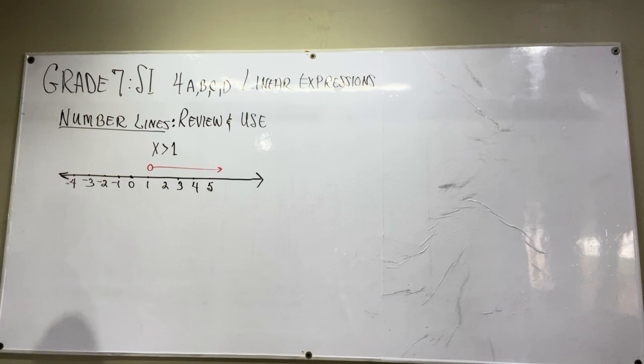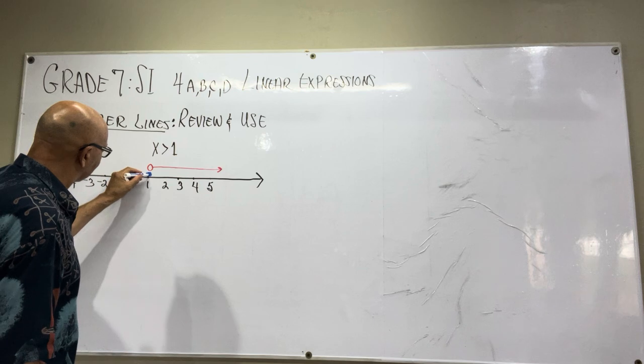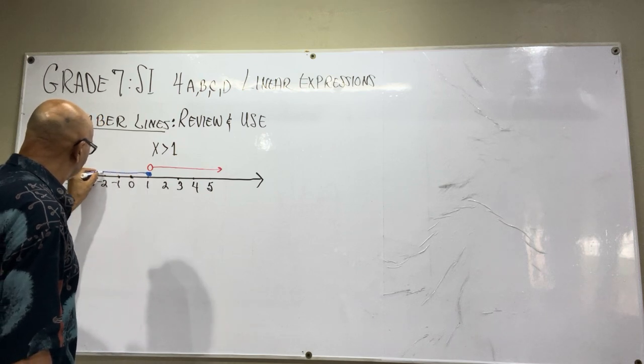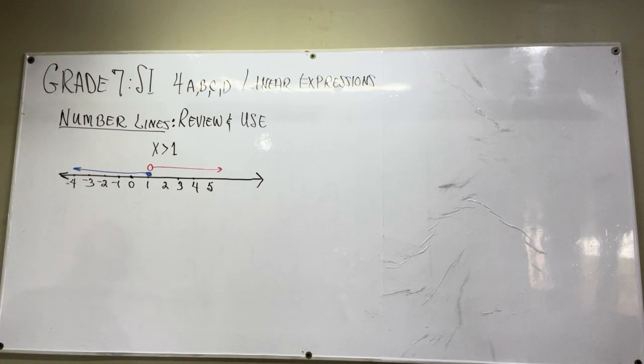And the alternative, you have this. That would say that, let's say we have another variable y, y is equal to one or less. So that would look like this: y is less than or equal to one.